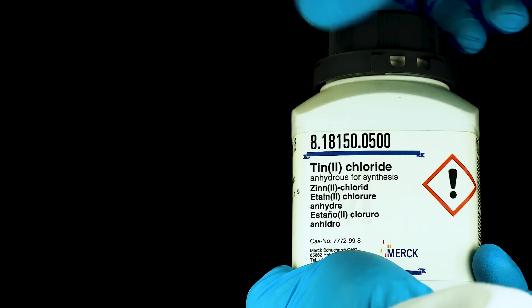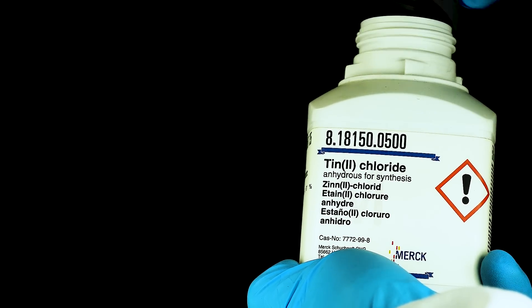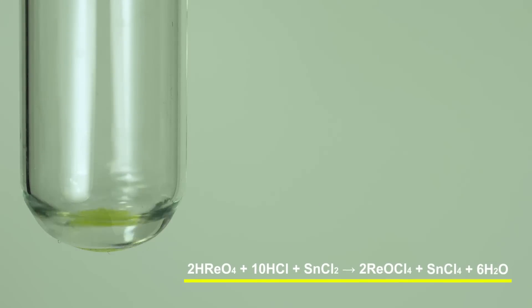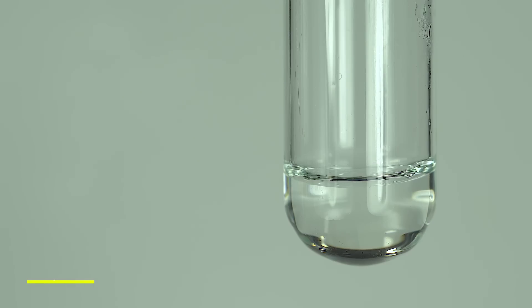The first suggested qualitative reaction for rhenium with pyrrenate ions was the interaction of thiocyanate ions with tin 2 chloride and hydrochloric acid. Pyrrenic acid solution containing any compounds of rhenium. As a result, the color changes from yellow to orange.